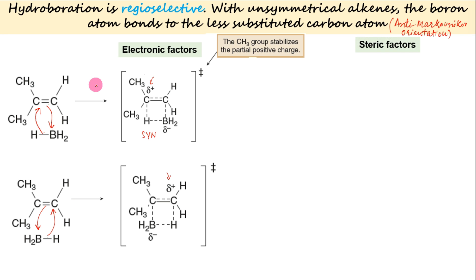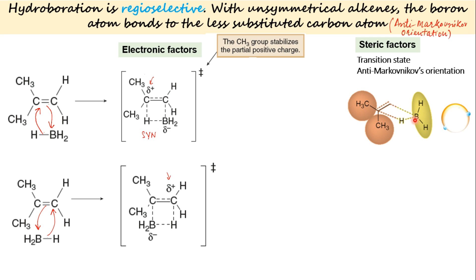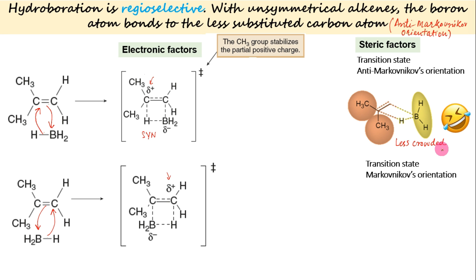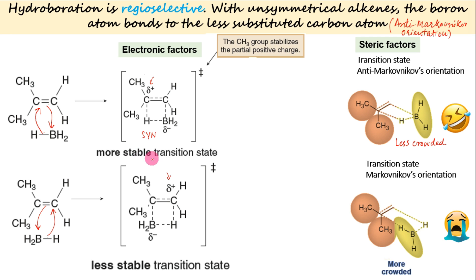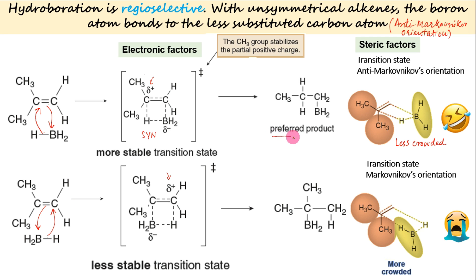Now let us consider the steric factors. In the first step of the proposed mechanism, both H and BH₂ are adding across the double bond simultaneously. Since BH₂ is bigger than H, the transition state will be less crowded and lower in energy if the BH₂ group is positioned at the less-sterically-hindered position — that is, at the less-substituted end. Thus both electronic and steric factors favor the addition of BH₂ at the less-substituted carbon and contribute to the observed regioselectivity for hydroboration-oxidation.